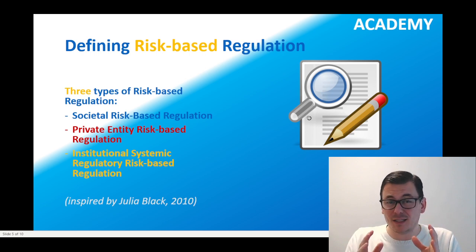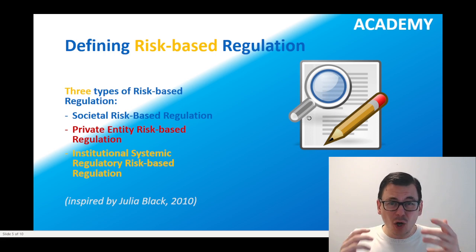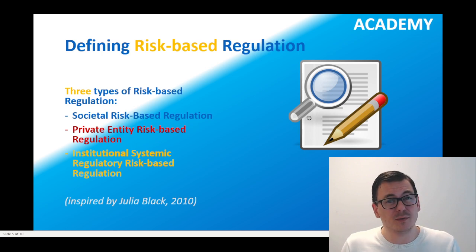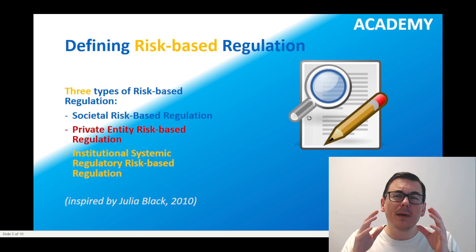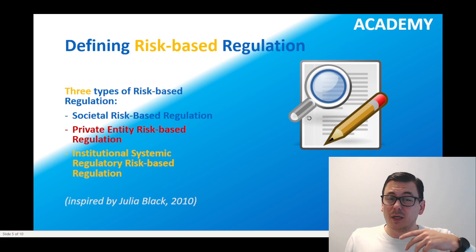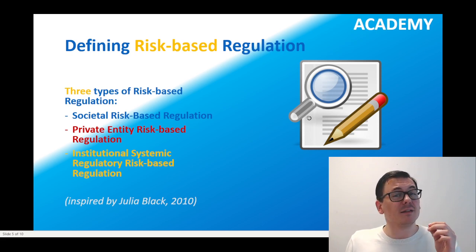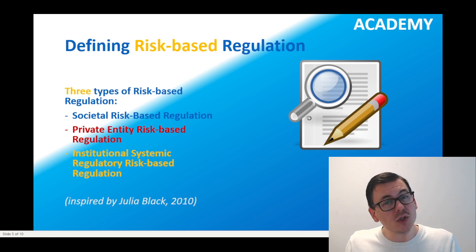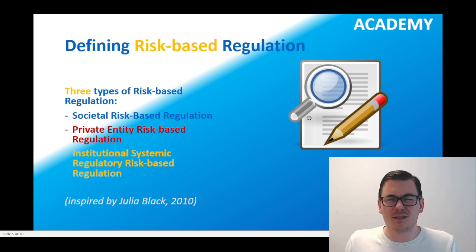Now let's look at what risk-based regulation is and what the types of risk-based regulation are. I base these three types on an OECD report from 2010, and especially the contribution by Julia Black. The three main types of risk-based regulation are: societal risk-based regulation, private entity risk-based regulation, and institutional systemic regulatory risk-based regulation. Let's take each one at a time.